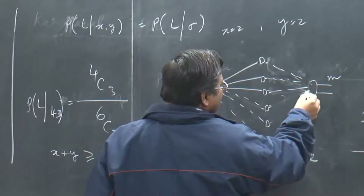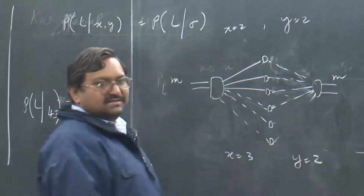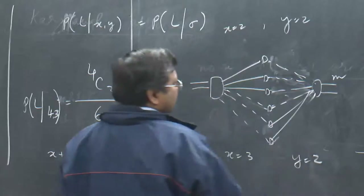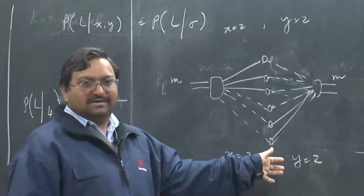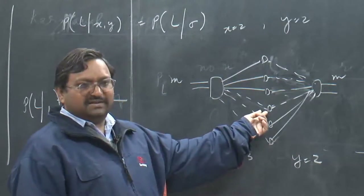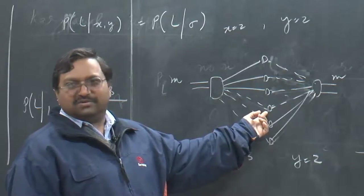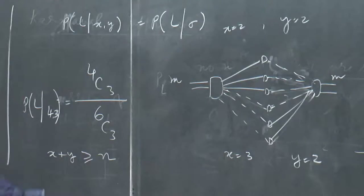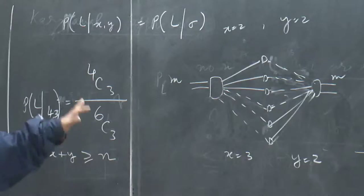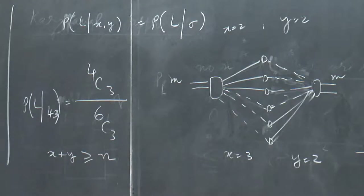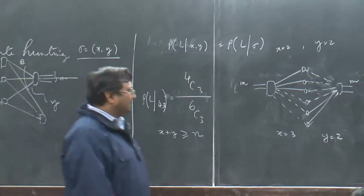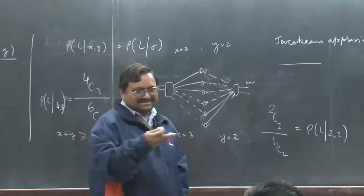When there are only 2 busy A-links and 2 are free, there is still 1 free path available and blocking is not possible. This is the condition — you cannot estimate P_L|sigma unless x + y ≥ N. Our factorial expression will not give a solution otherwise.